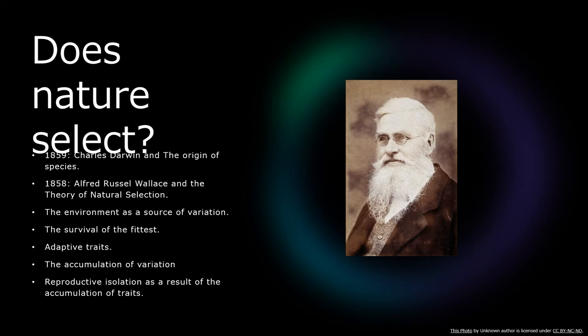Wallace and Darwin also proposed what is known as the survival of the fittest, meaning that species keep evolving, developing traits, and eventually becoming distinct species that cannot hybridize or mate with counterparts lacking those traits. This results in the creation of subspecies and what we call reproductive isolation. Both Darwin and Wallace were observers who observed phenomena, asked questions, and then fitted their observations within a framework to propose these theories of evolution.